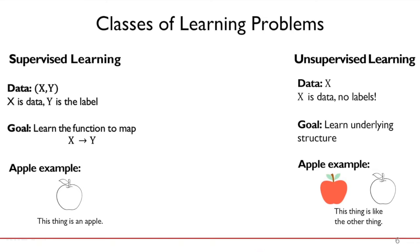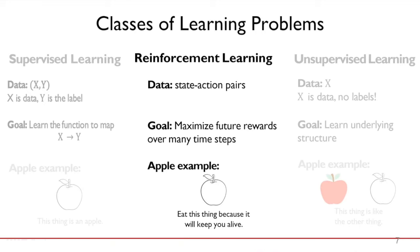In unsupervised learning, we have data but no ground truth — no labels. The goal is to find some underlying structure or pattern based on similarities in the data. For example, we don't care whether something is an apple; we just want to cluster objects based on their similarities. Reinforcement learning sits in the middle of both supervised and unsupervised learning. In RL, the input is state-action pairs, and the objective is maximizing future reward over many training steps.